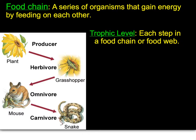A food chain simply illustrates the series of organisms as they gain energy from one another, and we have these things called trophic levels, which is essentially each step in our chain. The vast majority of energy for living systems on this planet comes from the sun. Plants use that energy through photosynthesis. So our autotrophic organisms are our producers, and then the heterotrophs eat the autotrophs. In this example, the base of the food chain is created by this producer.